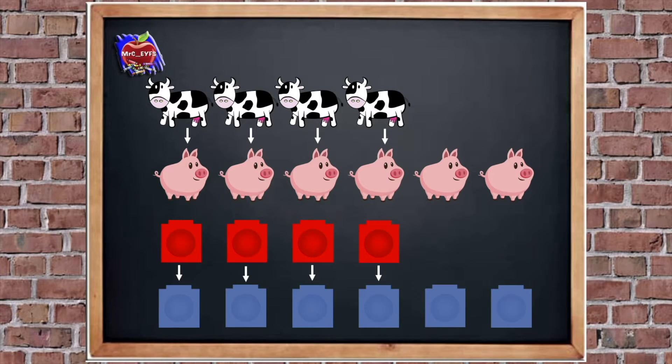So we can clearly see here, there are more blue cubes. So there are more pigs. And there are fewer red cubes. So that means there are fewer cows. Good job.